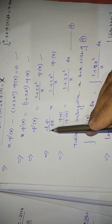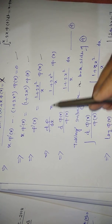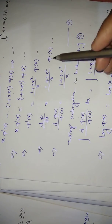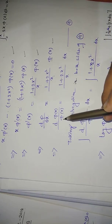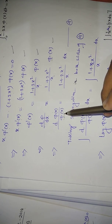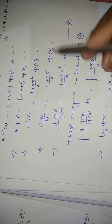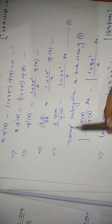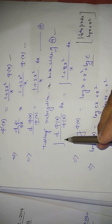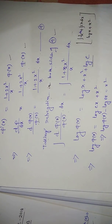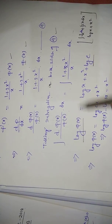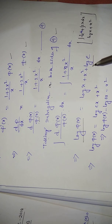So φ'(x)/φ(x) = (1 + 2x²)/x = 1/x + 2x. Taking integration on both sides of equation (4): ∫ dφ/φ = ∫ (1/x + 2x) dx.